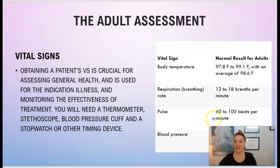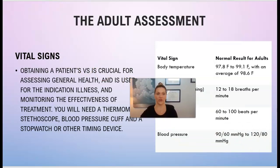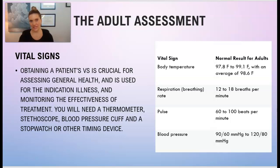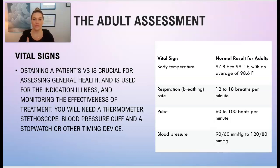We talked about vital signs — I'm going to move so you can see this graph. In the adult assessment, you're going to be documenting vital signs first before you document anything else probably. You want to obtain their blood pressure, temperature, pulse, and then the respiration rate. Some doctors and facilities will also have you document a pulse oximetry as well.